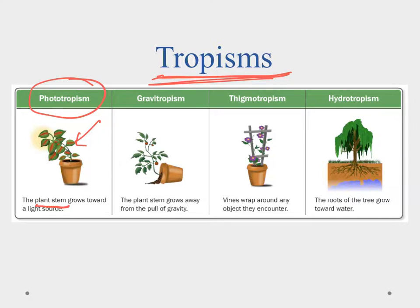There's also a response to gravity called gravitropism — the plant's stem grows away from the pull of gravity. So if I knocked a pot over, you'd notice that the plant would try to reach up to the sky. The stem does this because it wants to get the leaves up and into as much light as possible. Gravitropism is when the plant reacts to gravity.